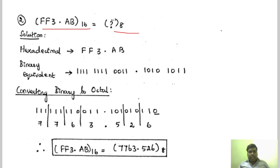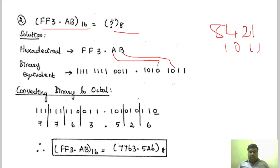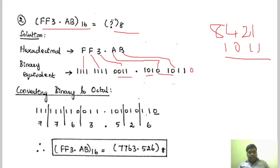Now you have to write the equivalent binary value using the 8421 code. B is 11, so it is 1, 0, 1, 1. A is 10, so it is 1, 0, 1, 0. And 3 is 0, 0, 1, 1. And for F, all bits are 1 — 1, 1, 1, 1. And again for F, all bits are 1. Now grouping in 3 bits: starting from LSB for integer part gives groups 0, 1, 1; then 1, 1, 0; then 1, 1, 1; then triple 1. For the fractional part from MSB: 1, 0, 1, 0; then 1, 0; and adding one extra 0. So the equivalent octal number is: this is 6, this is 2, this is 5, this is 3, this is 6, this is 7, 7. For this hexadecimal number, the corresponding octal number is 7763.526.